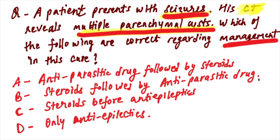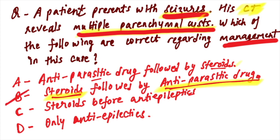For multiple parenchymal cysts with seizures, the approach is: start with steroids first, followed by anti-parasitic drugs, because it is a parenchymal cyst presentation. Other options may list anti-parasitic drug followed by steroids — these are very similar-looking options that confuse students. This is exactly the concept they want you to have clear, so you can mark the right answer. This is how exam questions will be structured.